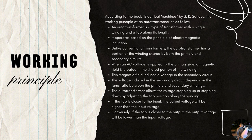The auto transformer allows for voltage stepping up or stepping down by adjusting the tap position along the winding. If the tap is closer to the output end, the output voltage will be higher than the input voltage. Conversely, if the tap is closer to the input, the output voltage will be lower than the input voltage.